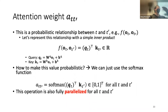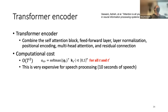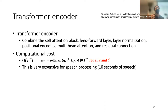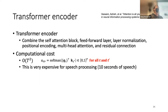Self-attention is one component of the transformer encoder. The transformer encoder combines self-attention with other components like layer normalization and positional encoding, which I will explain next week. By using self-attention, we can capture the entire context and compute everything in parallel form. This makes it very GPU-friendly.